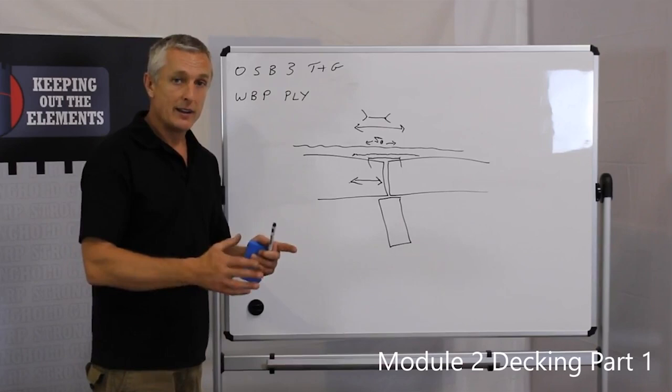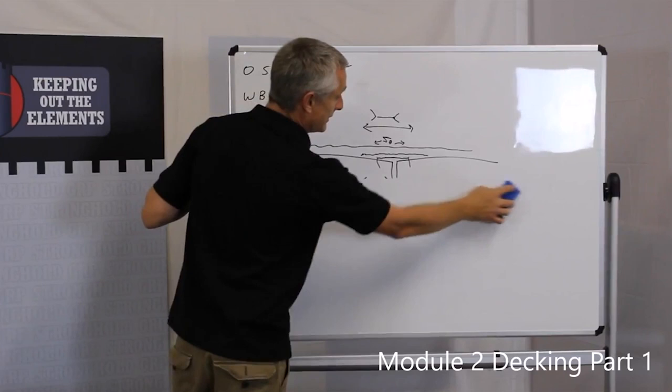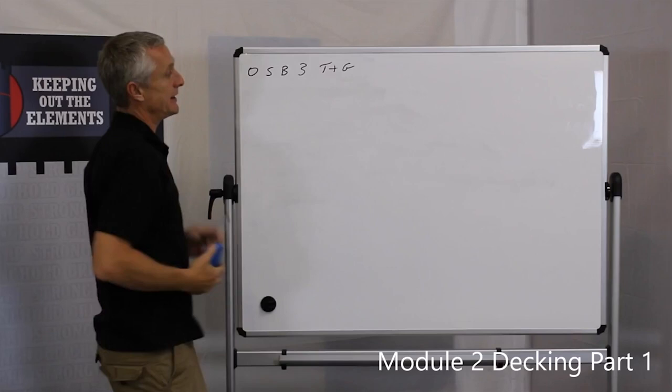it can be quicker and more practical and a better job just to use the correct product which is the TNG board. So if we remove this diagram of a butt jointed product, we remove WBP ply as we discussed it,